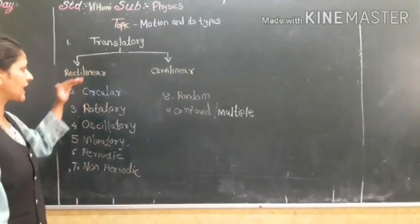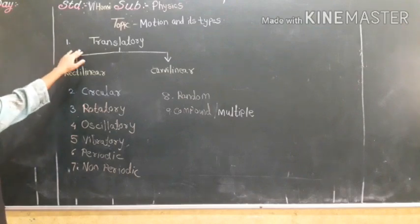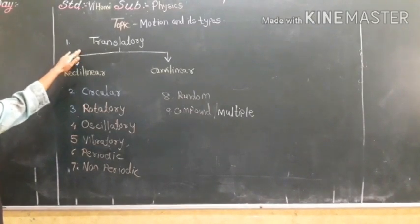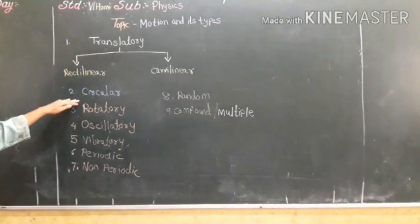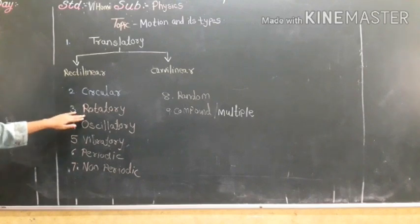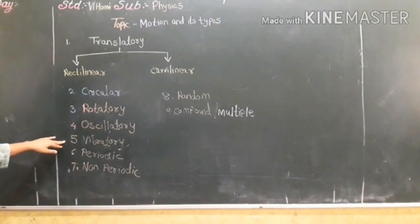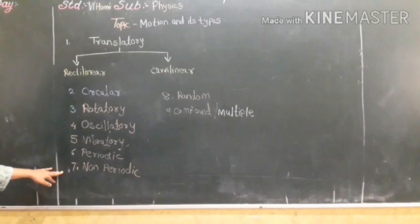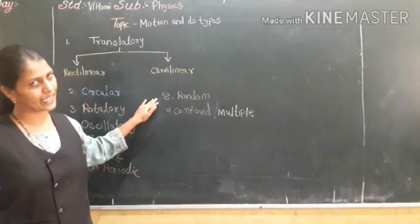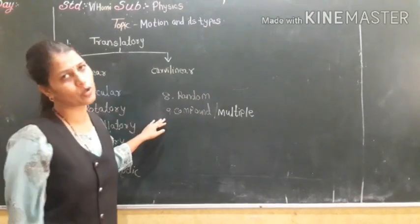Let me recall all the types of motion: Translatory — uniform and non-uniform linear motion; rectilinear; curvilinear; circular — moves in circular path; rotatory — fixed axis; oscillatory — to and fro; vibratory — gets vibrated; periodic — repeats after equal interval of time; non-periodic — does not repeat after equal interval of time; random — moves in any direction; compound or multiple — possesses two or more motions together.